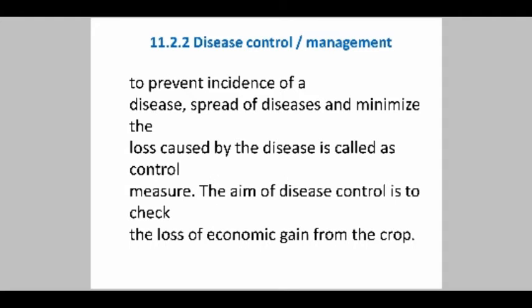Let's talk about disease control or management. Some suitable measures should be taken to prevent the incidence of disease, the spreading of the disease, and to minimize the loss caused by disease — these are called control measures. The aim of disease control is to check the loss of economic gain from crops. The principles of plant disease management have two approaches: management of a single disease of the crop, and planning for the overall health of the crops.